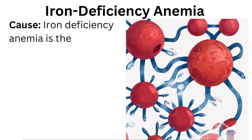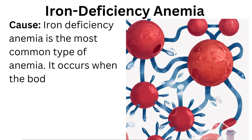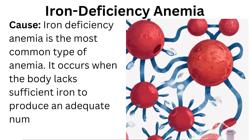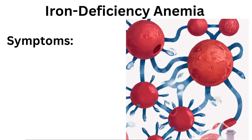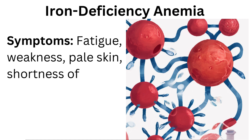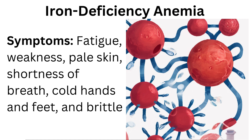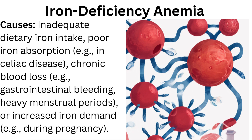Iron deficiency anemia is the most common type of anemia. It occurs when the body lacks sufficient iron to produce an adequate number of healthy red blood cells. Symptoms include fatigue, weakness, pale skin, shortness of breath, cold hands and feet, and brittle nails. Causes include inadequate dietary iron intake and poor iron absorption, for example in celiac disease.